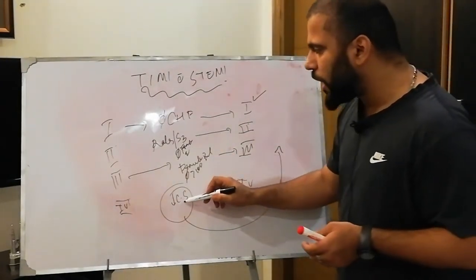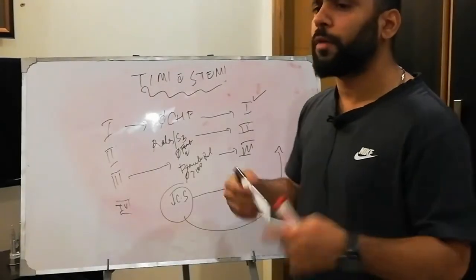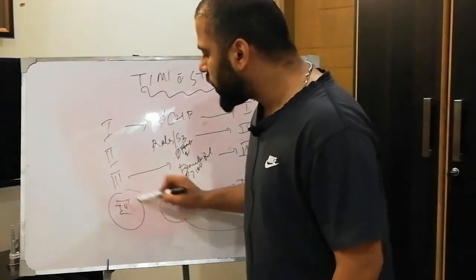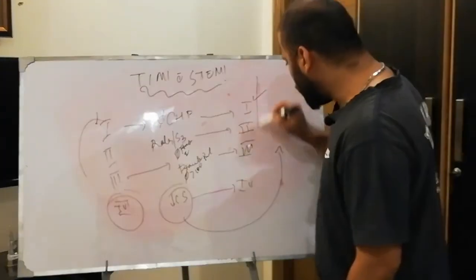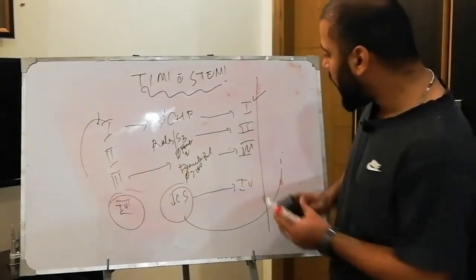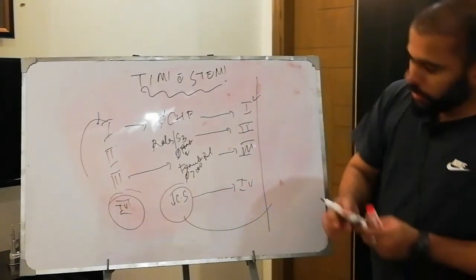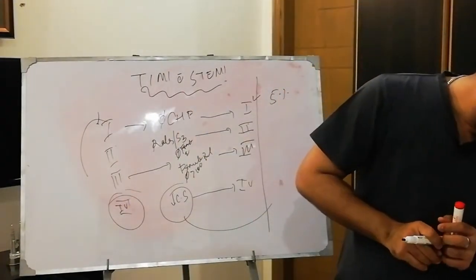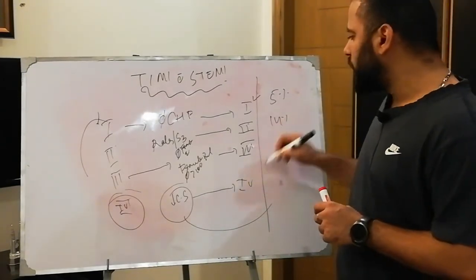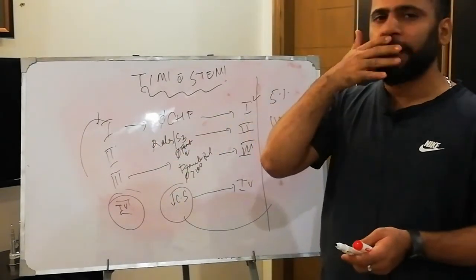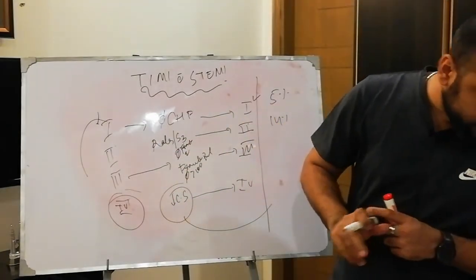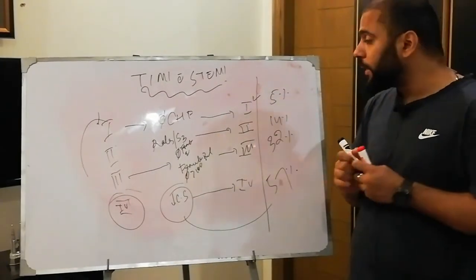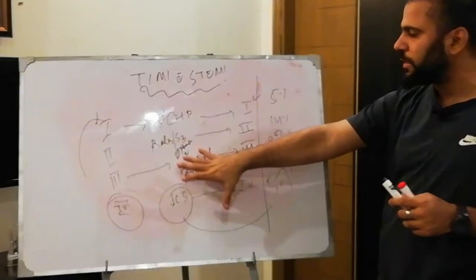The mortality associated with each Killip class is very important. Class one has only 5% mortality. Class two — with rales or S3 gallop — has approximately 14% mortality, almost double. Class three — pulmonary edema — carries 32% mortality. And class four — cardiogenic shock — has 57% mortality. You need to counsel your patients according to these numbers based on their clinical signs.